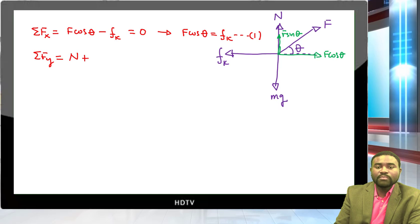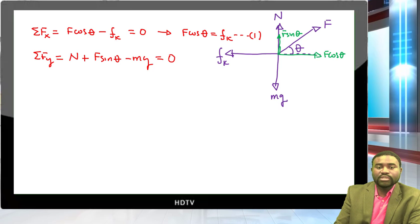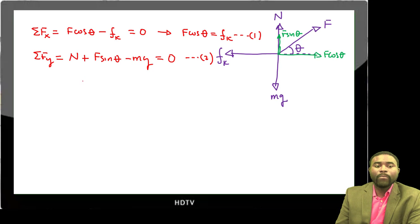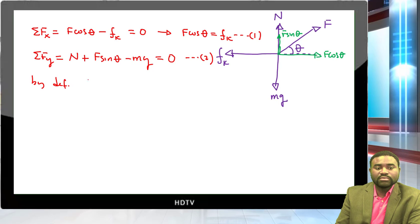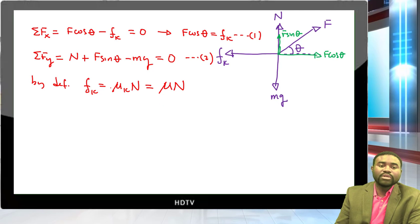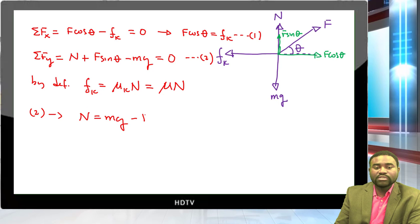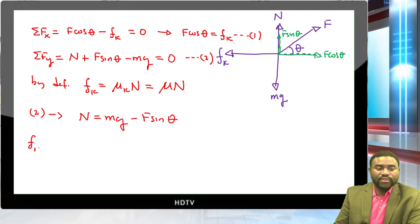By definition, f_k = mu * N. From equation 2, N equals mg minus F sine theta. Therefore f_k = mu*(mg minus F sine theta) = mu*mg minus mu*F sine theta.